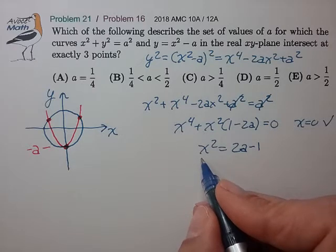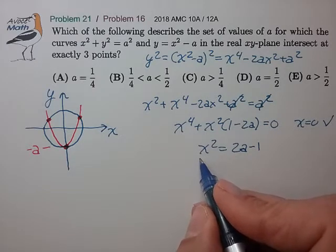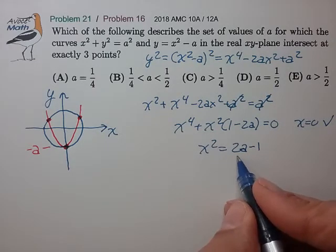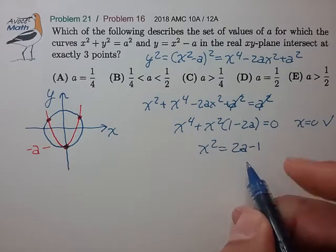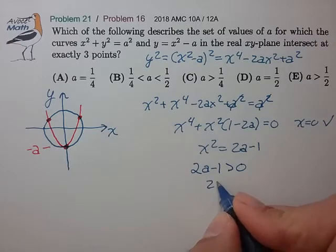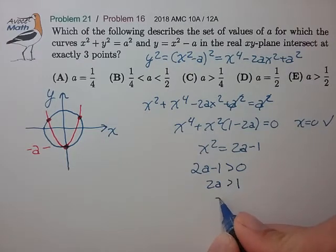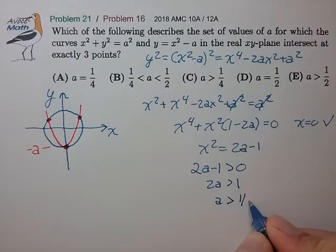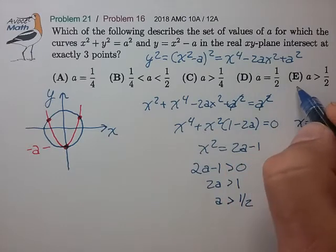And in order for it to generate a real solution in x, we know that the right side has to be a positive number. So we have that 2a minus one has to be greater than zero. 2a has to be greater than one. a has to be greater than one-half for choice E.